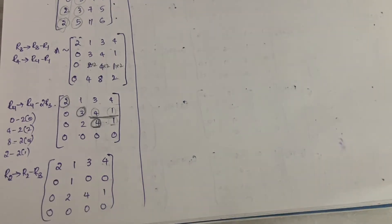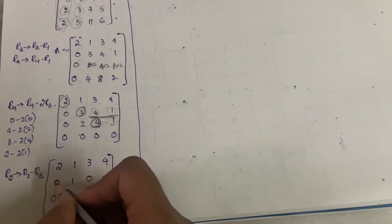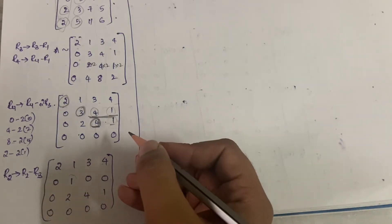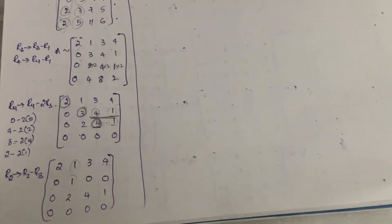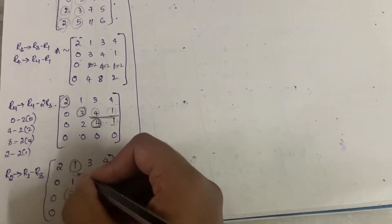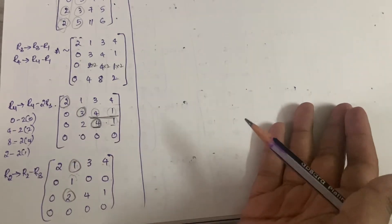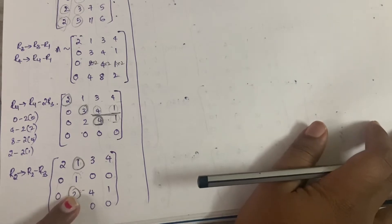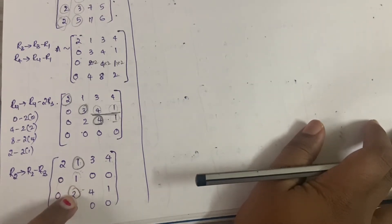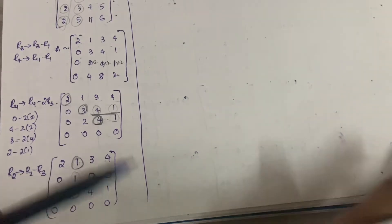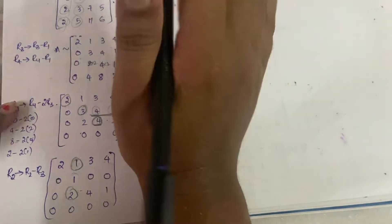Now let us see what else needs to be made zero. All these elements are now made zero. This diagonal position is already one so no change needed there. Now we need to make the element above it — this one — zero. One minus one gives zero, and the other element is 2, so we need two minus two equals zero.